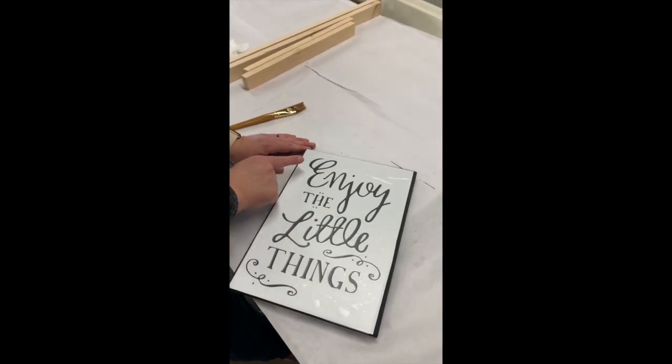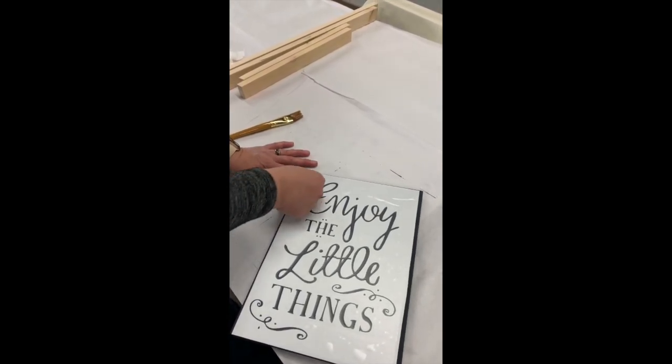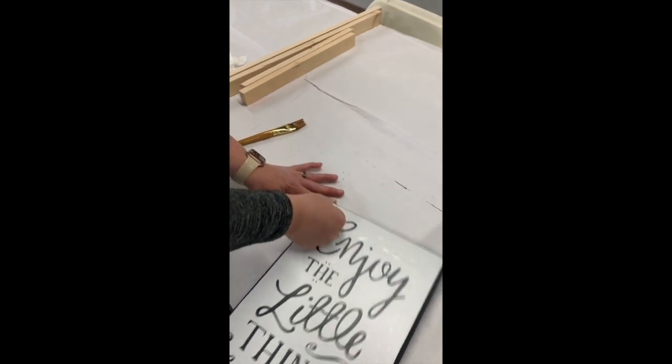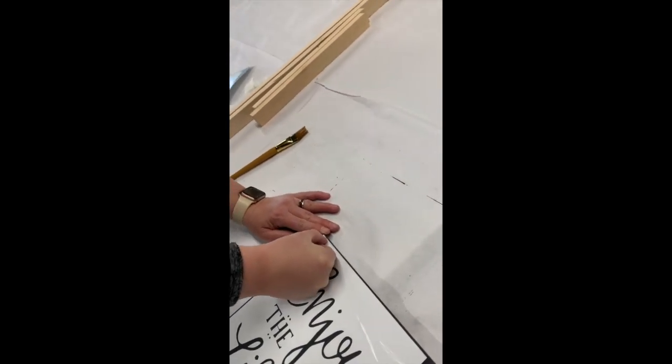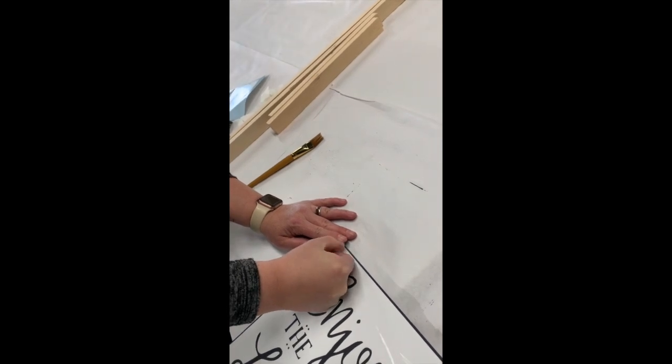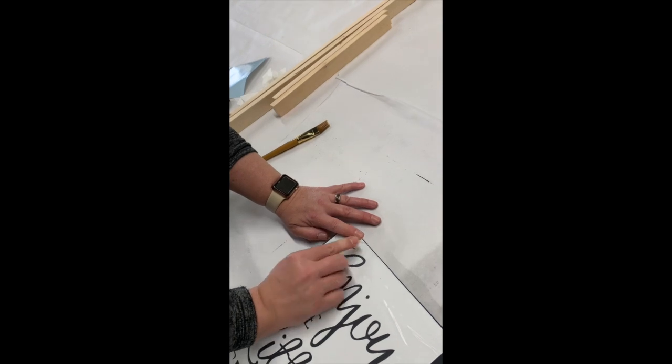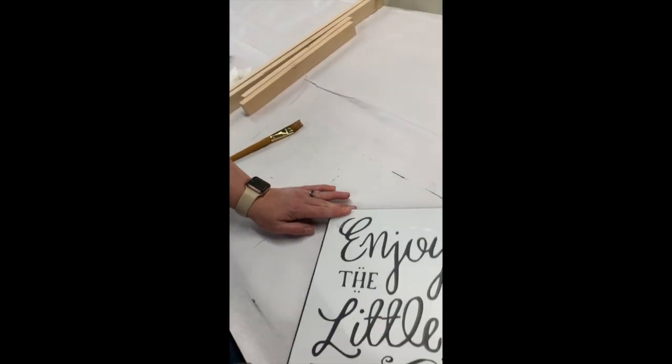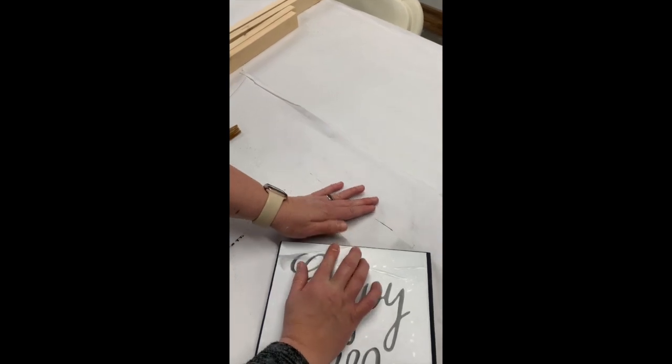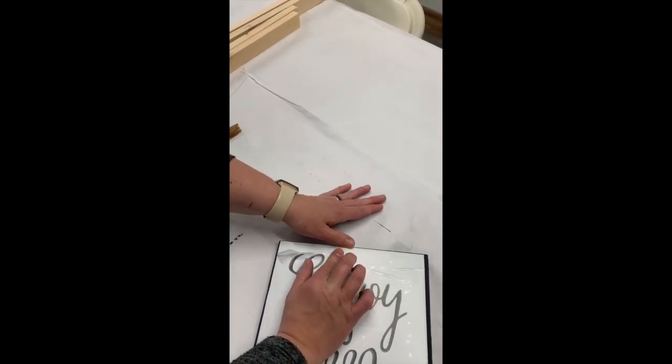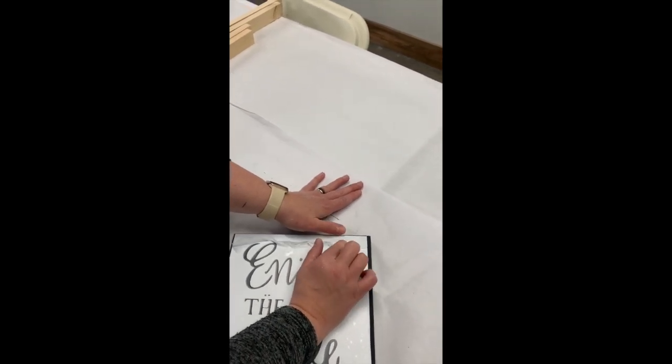Okay, so now we're going to take the top clear layer off. This is probably the hardest part of the whole process. You want to scrape it with your fingernail with the edge to get it started. Once you get it started like this, then the best thing to do is try to get the shortest edge all the way off. So hold it in place. Hold the stencil in place with your thumb and then just peel back lightly to get it all started.